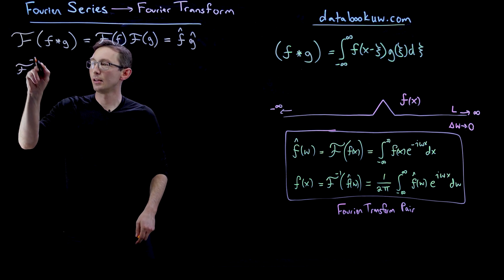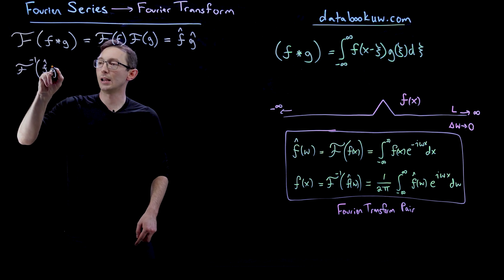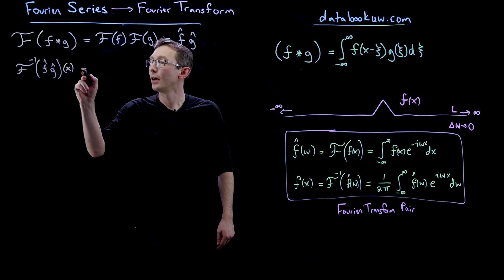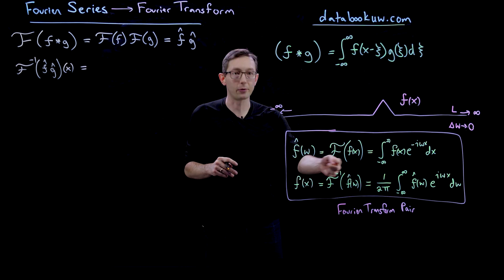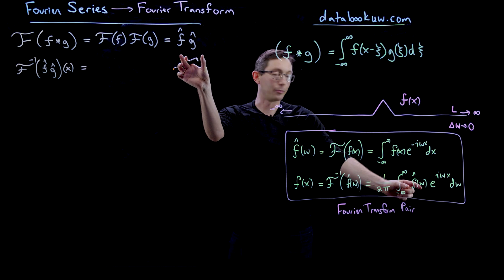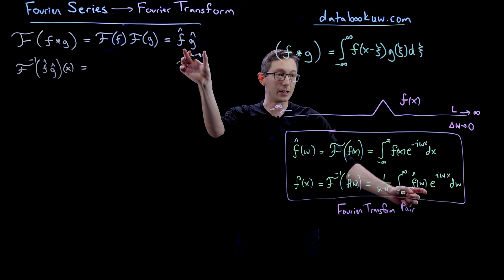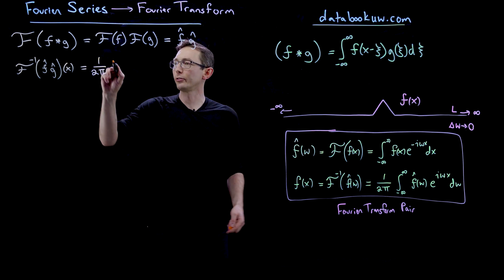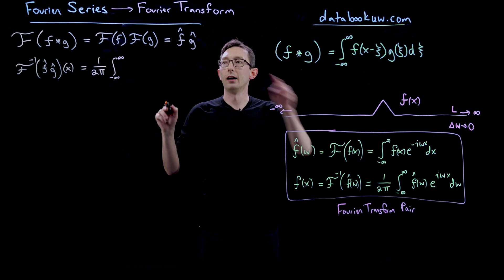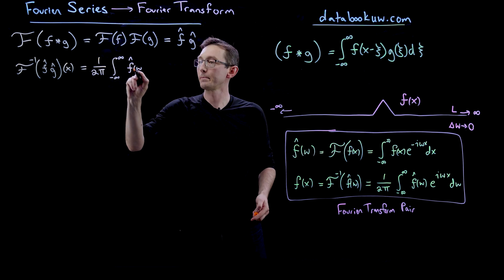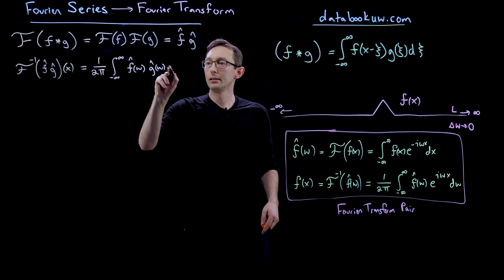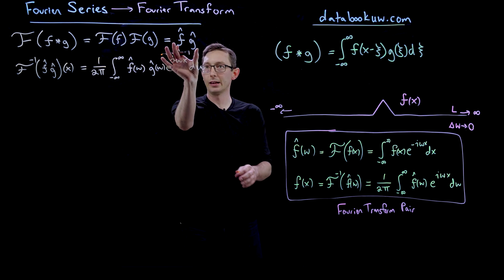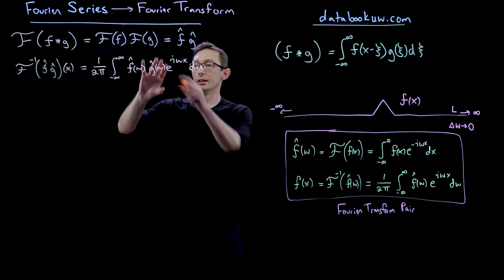So we're going to take the inverse Fourier transform of f-hat g-hat. If I inverse Fourier transform this, I'm going to get a function of x. I'm going to take this inverse Fourier transform formula for my Fourier transform pair, and I'm going to plug in f-hat and g-hat. So this would be 1 over 2π, integral from negative infinity to infinity of f-hat of omega, g-hat of omega, e to the i omega x, d omega.